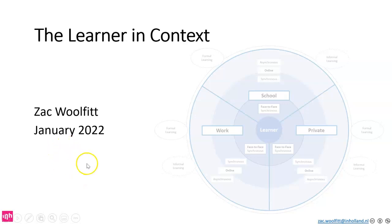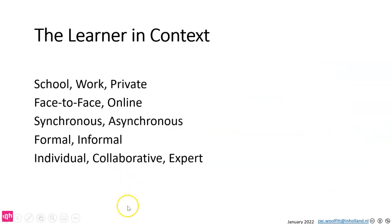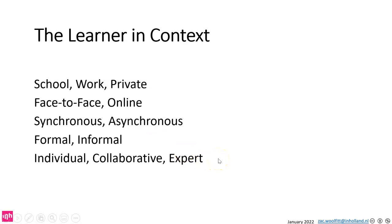Hello, I'm working on a model to represent different elements of the learning context and I'd love to get your input on it. I'm trying to find ways to combine school work and private learning with face-to-face and online learning, with synchronous and asynchronous interactions, formal learning and informal learning, and learning as an individual, collaboratively, or as an expert.